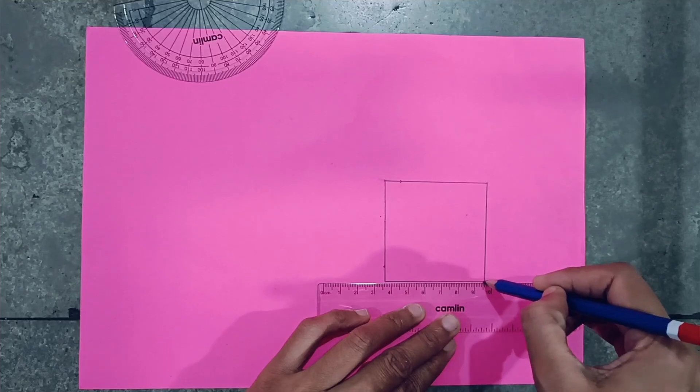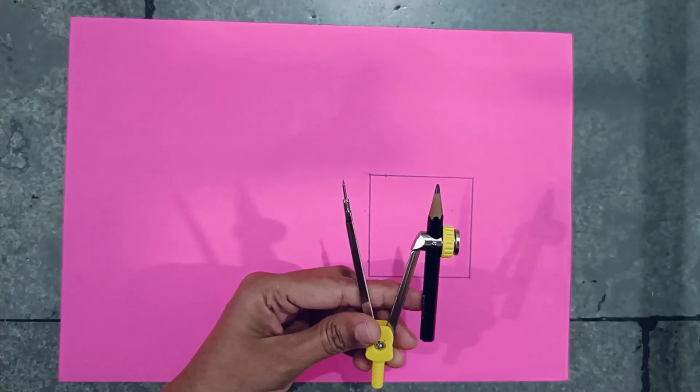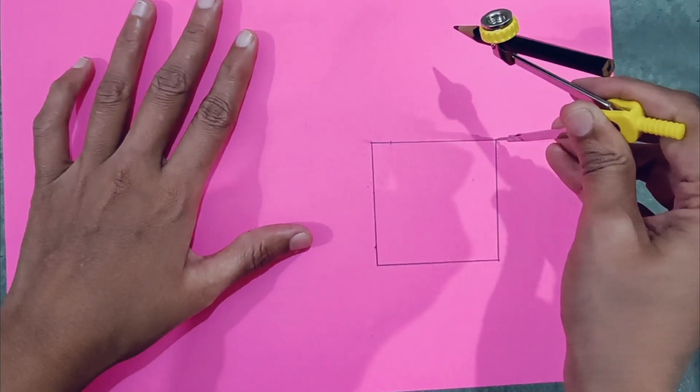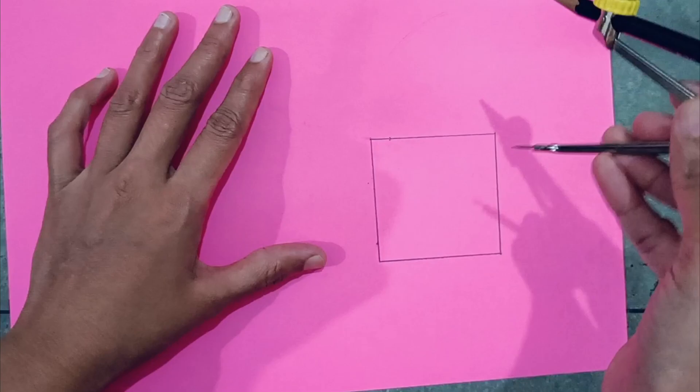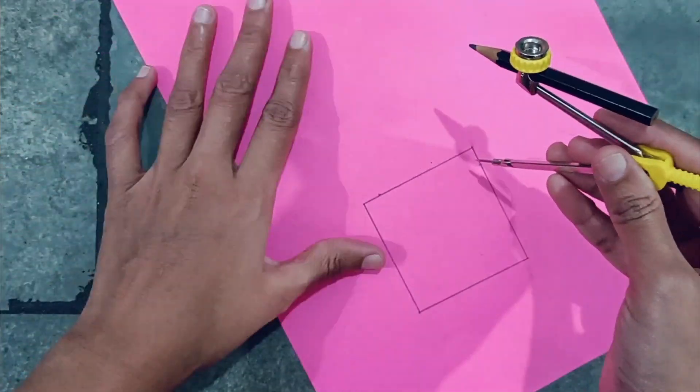Join these two points. See, the square is ready. Take any measurement as much height as you want it to be, taking this much from this point, from this point, again from here.